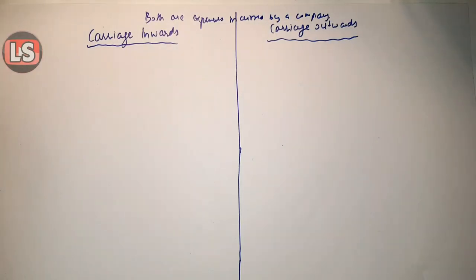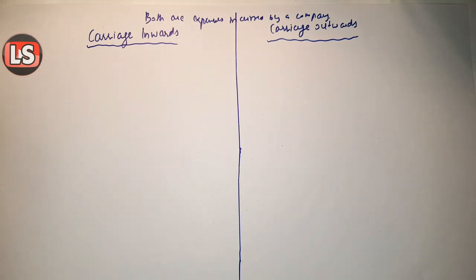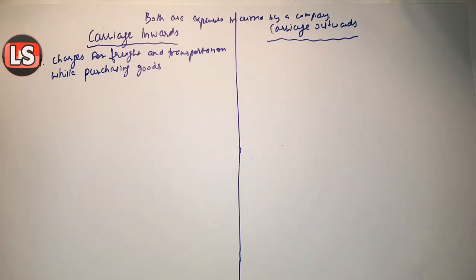Both are expenses which are incurred by a company, but still both are different. Basically, whenever you are doing a sale or purchase and carriage is involved, carriage inwards and carriage outwards are used. One is charged when goods are sold, and the other is charged when we procure goods from our supplier.